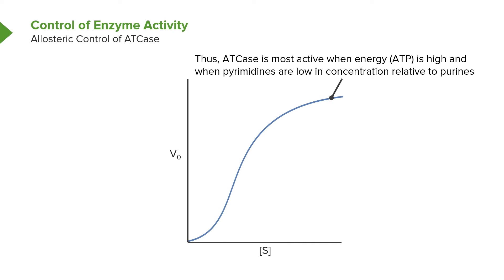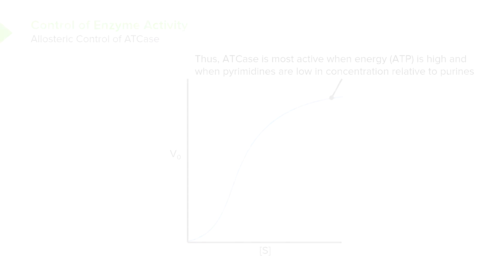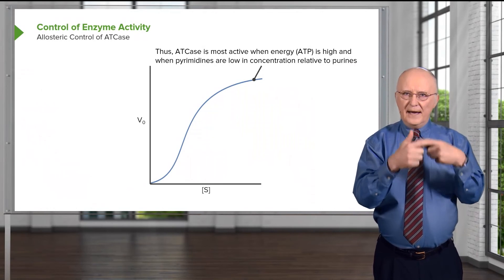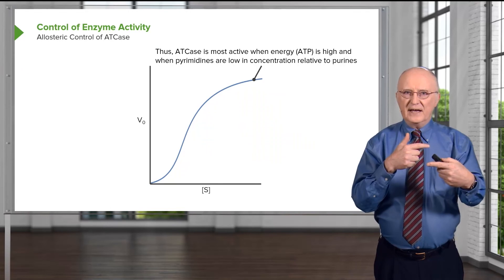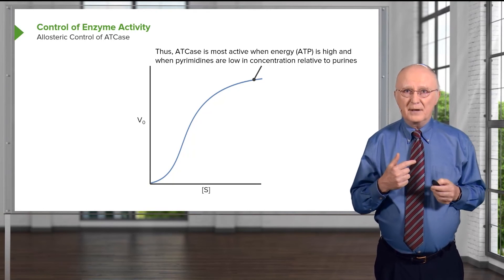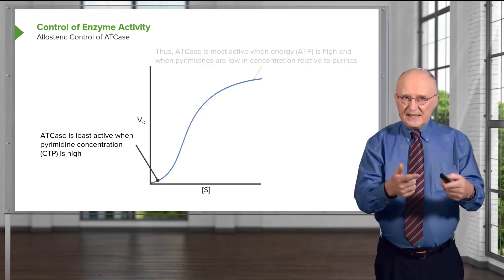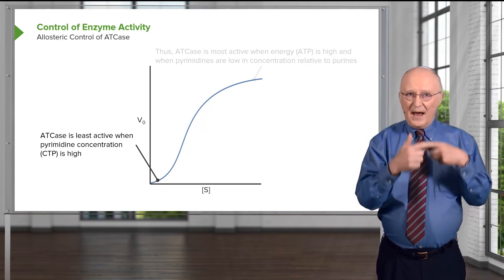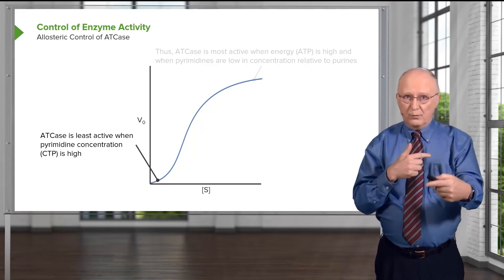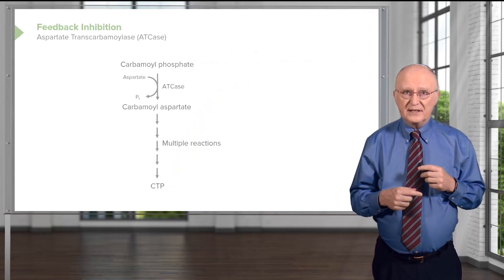There's yet another thing to consider: ATP is a purine and CTP is a pyrimidine. So when ATP concentration is high, that means the purine concentration is high. When we look at nucleic acids, purines pair with pyrimidines. So in addition to having high energy activating this enzyme, we have a purine activating an enzyme that makes pyrimidines. ATCase is least active when the pyrimidine concentration is high, which is likely when pyrimidines outnumber purines. This is a very nice way of bringing balance to the nucleotides, and the enzyme has all of these considerations built into its structure.